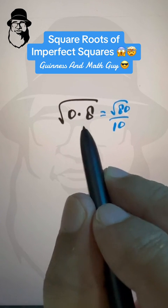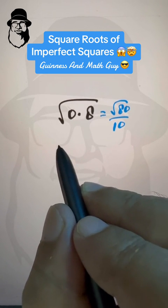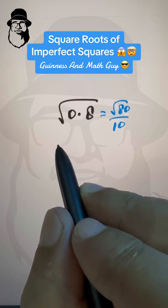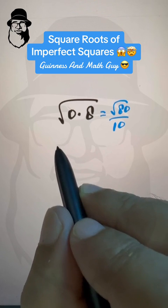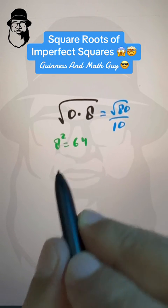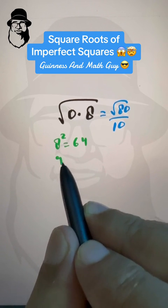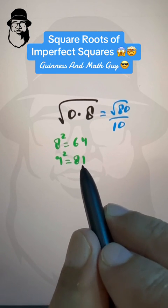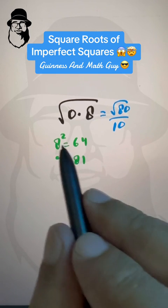Now, we'll do the same process. Square root of 80 nearest, square of 9 is 81. So, let's take square of 8, that is 64, square of 9 is 81. So, this is bigger than 80, so we'll take this one.